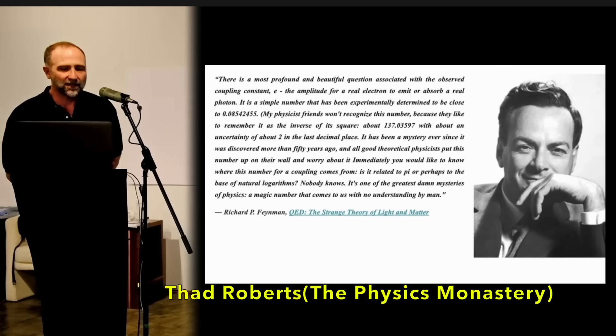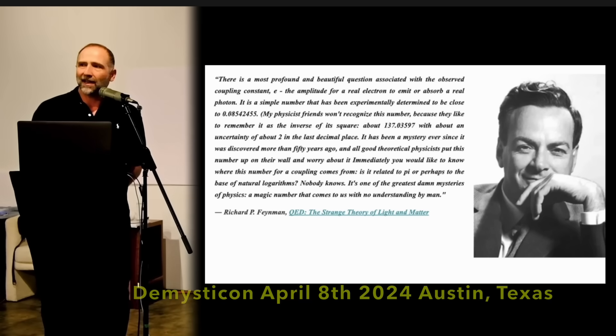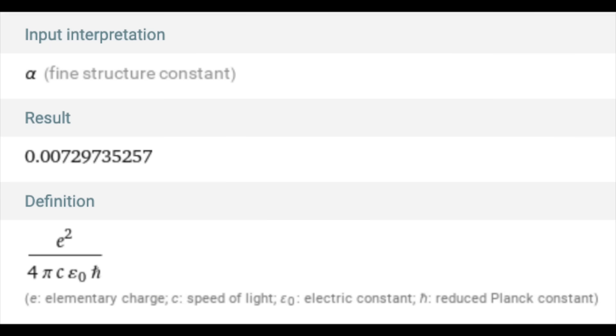Now, this fine structure constant can't be wished away because you don't like its units. It's a central mystery in the constants of nature that's dimensionless, making it a geometric number like pi, except we don't have the geometry it belongs to.